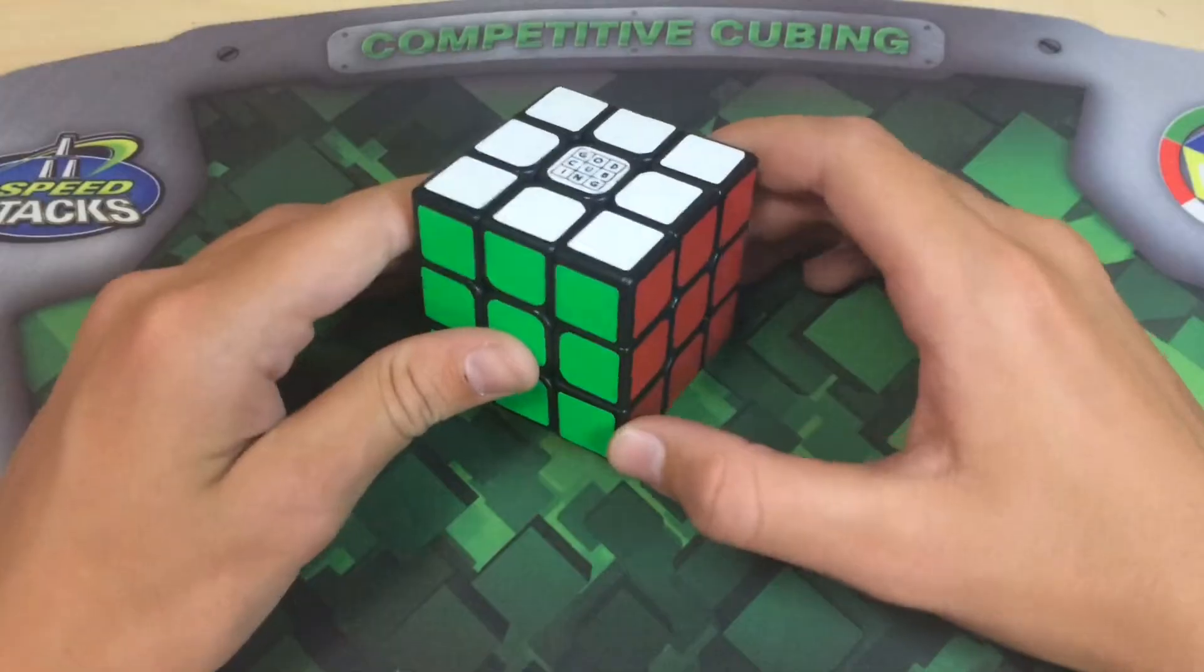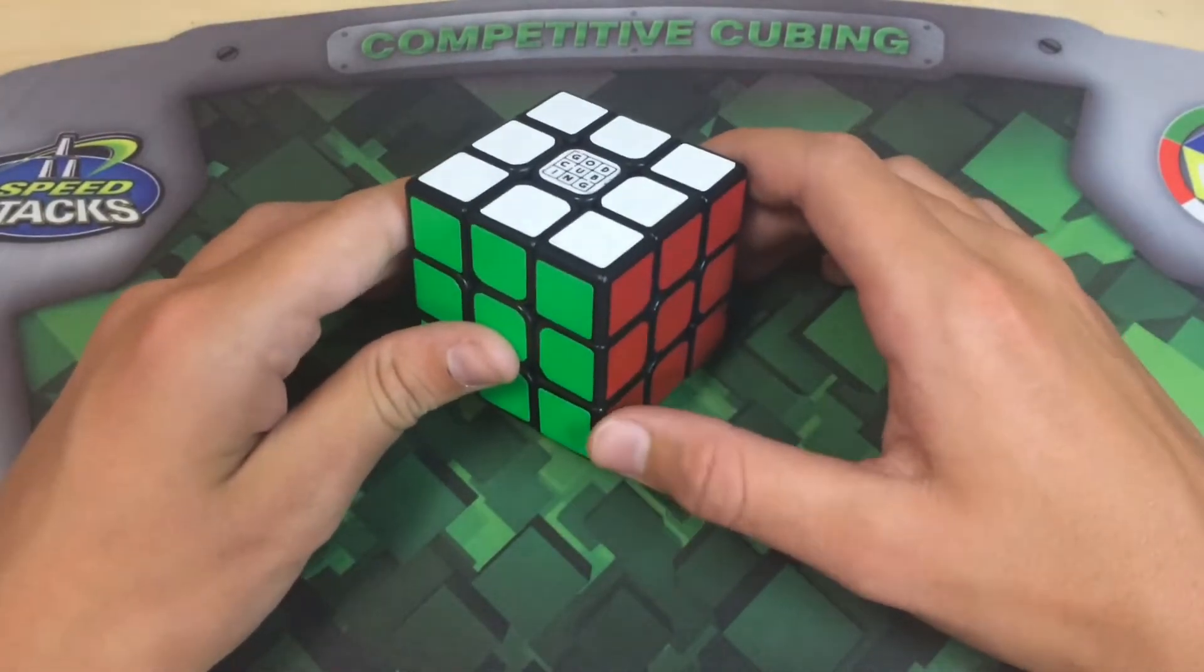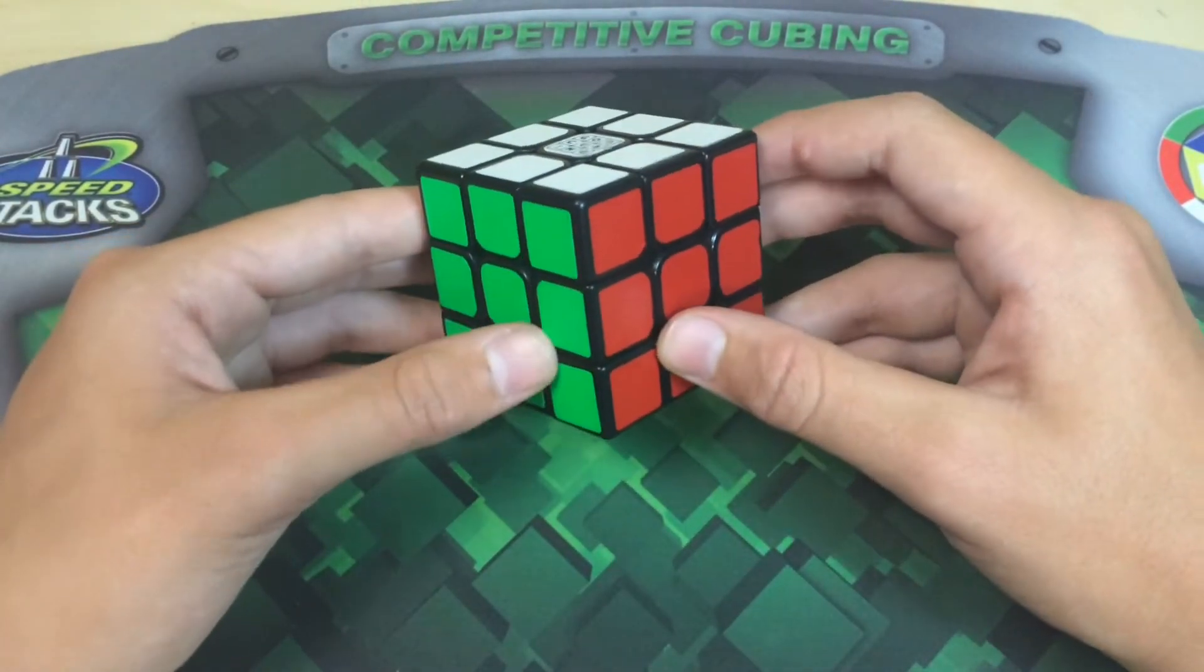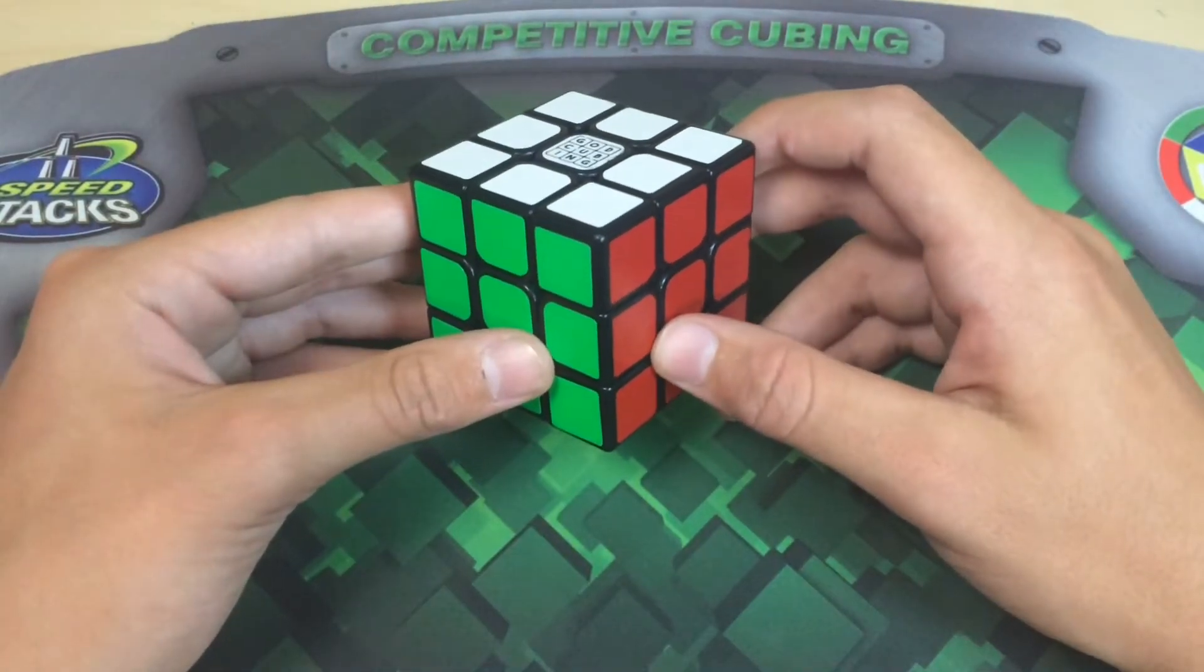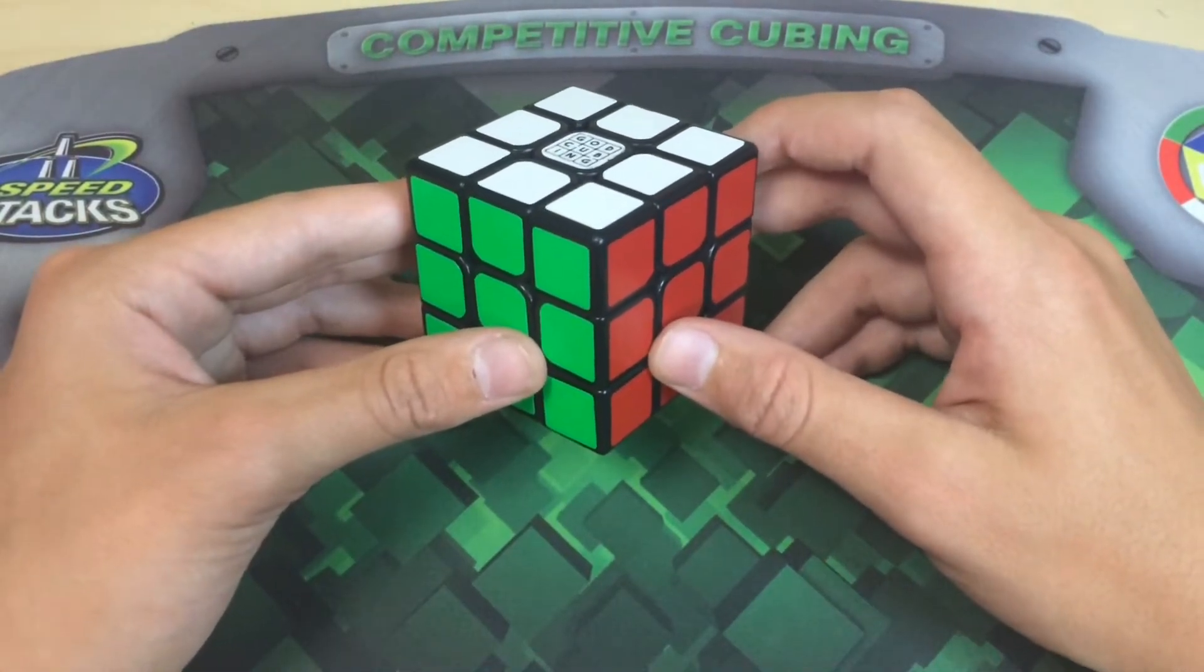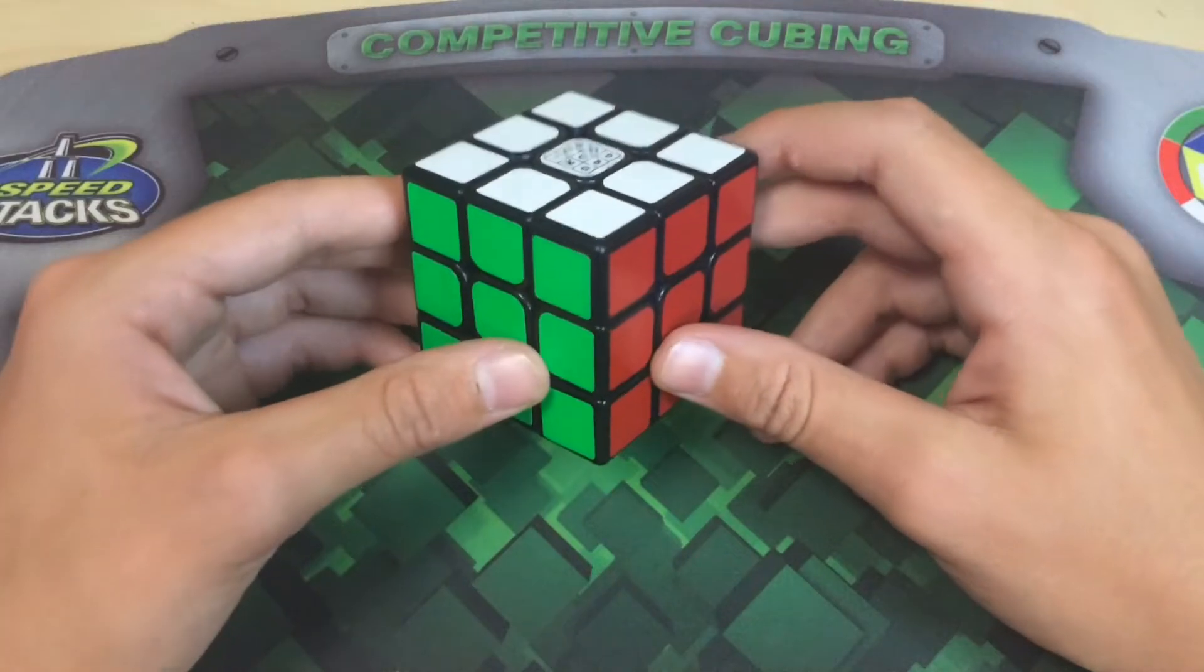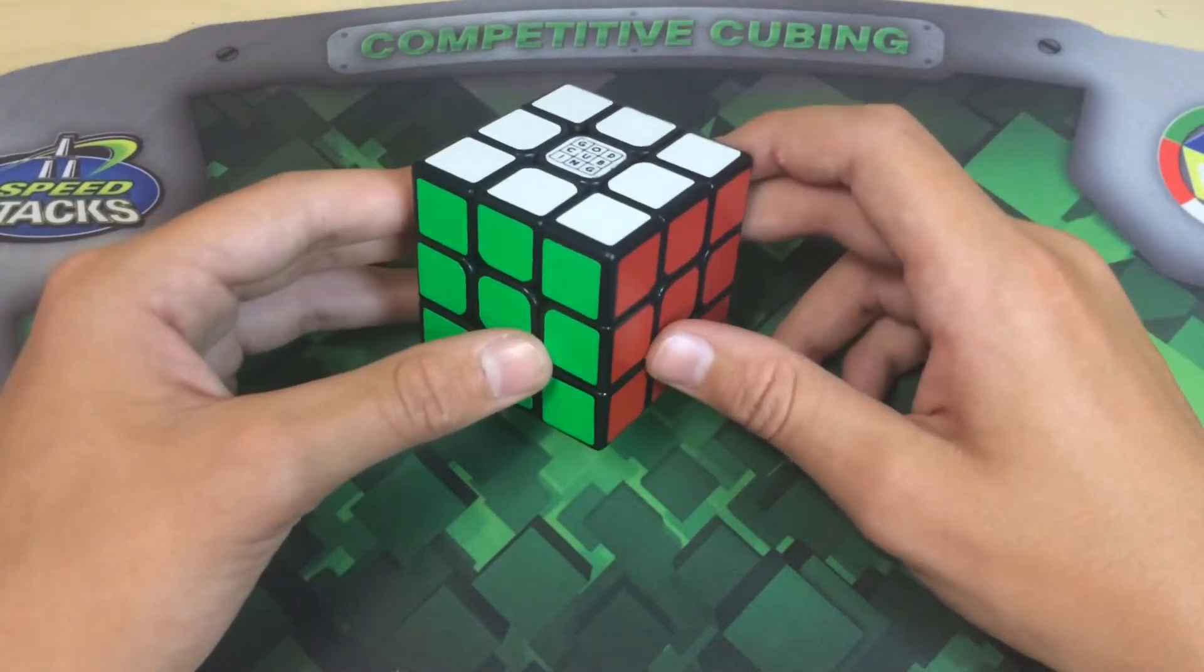Now that we know how to solve the cube like a computer, we just have to inverse our solution. But we don't have the solution, otherwise we would have already solved it. So what we do is we just do random moves within the constraints of each step.